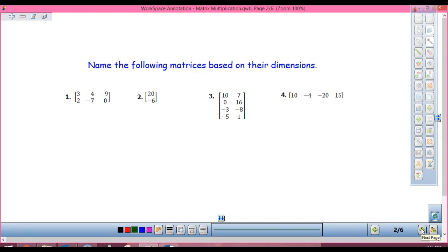So the first thing we need to talk about is dimensions, because there's some dimensions that we can multiply together and some that we can't. So number one, what are my dimensions? Two by three. Number two is a two by one. How about three? Four by two. And number four? One by four. Good.